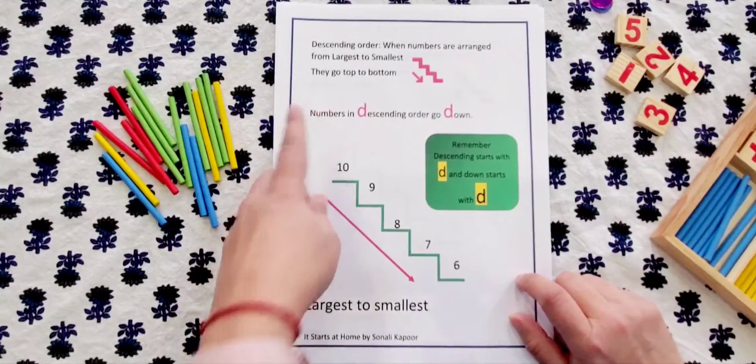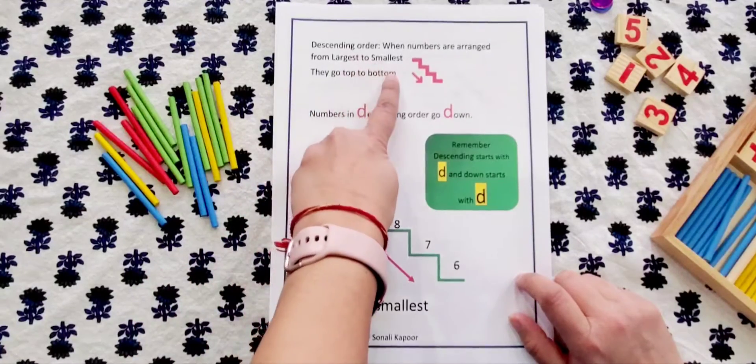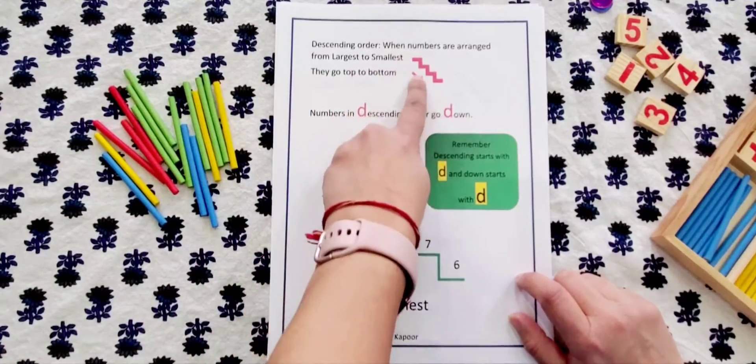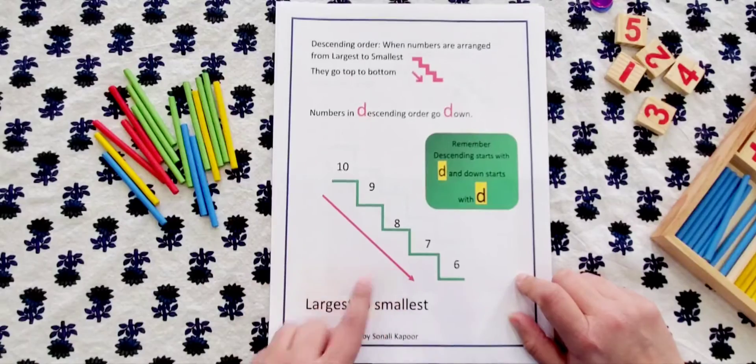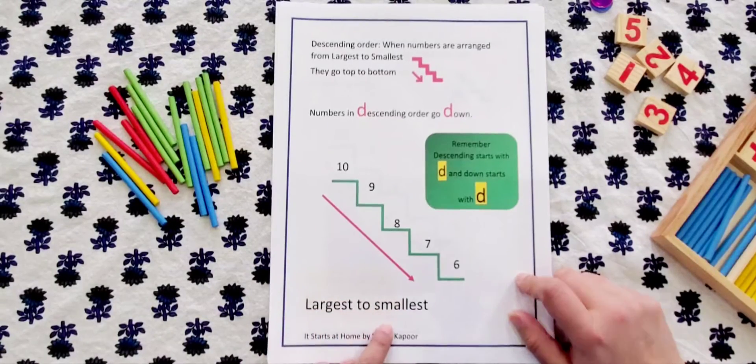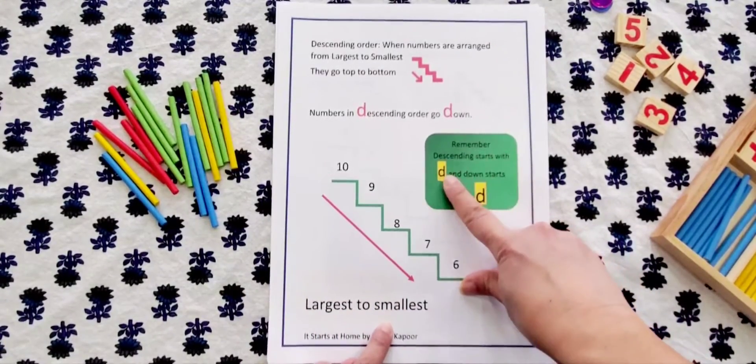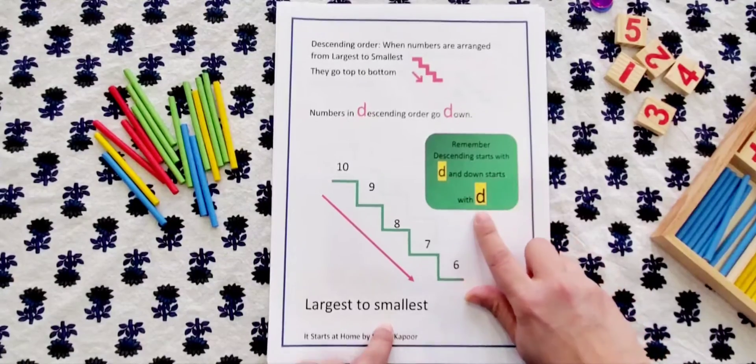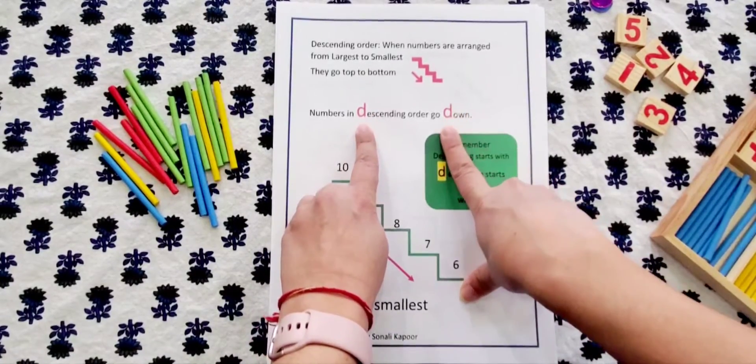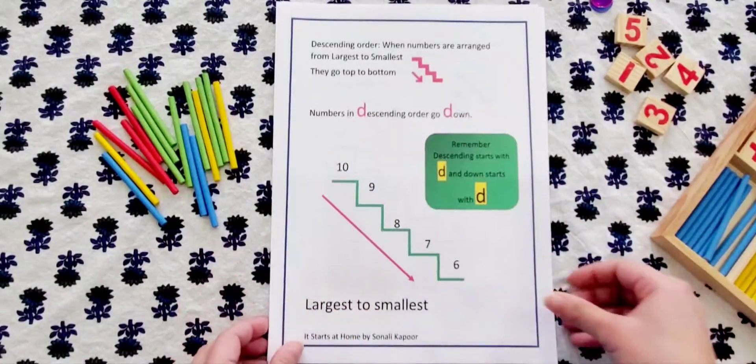Starting with descending order, I've explained when numbers are arranged from largest to smallest they go top to bottom. The picture describes here which is largest to smallest. Remember descending starts with D and down starts with D too, so D and D - that's something that the kids can always relate and understand.